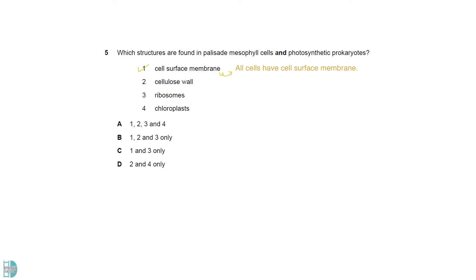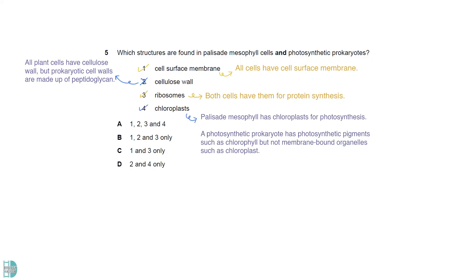All types of cells have a cell surface membrane. Cellulose wall is found in the plant cells, but not in prokaryotic cells. Their cell walls are made up of peptidoglycan. Ribosomes are found in both. They are needed for protein synthesis in all kinds of cells. Chloroplasts is found in the palisade mesophyll for photosynthesis. A photosynthetic prokaryote has photosynthetic pigments such as chlorophyll, but not membrane-bound organelles such as chloroplasts.